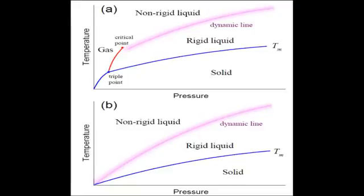and gas-like fluid, we call it non-rigid liquid. These states are divided from each other by a new dynamic line on the phase diagram.